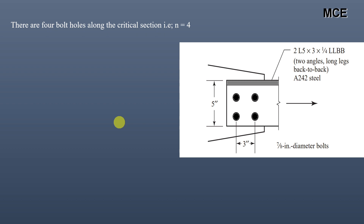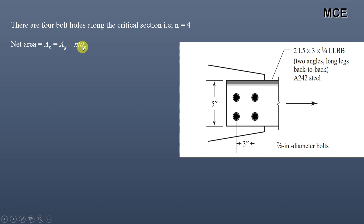Since there are 4 bolt holes total for the two angles — 2 in each along the critical section — the number of bolt holes is 4. The net area = gross area minus (number of bolt holes × thickness × bolt hole diameter) = 3.88 − (4 × 1/4 × 1) = 2.88 in².